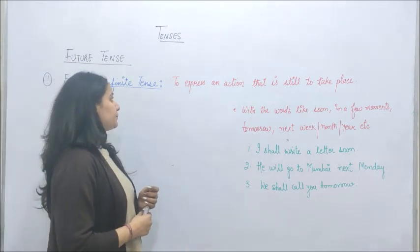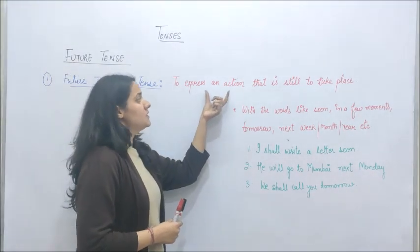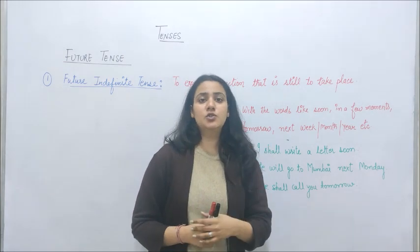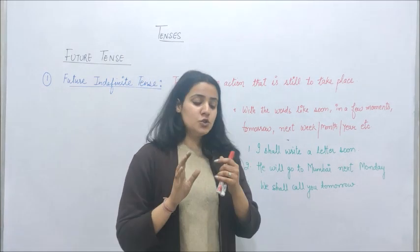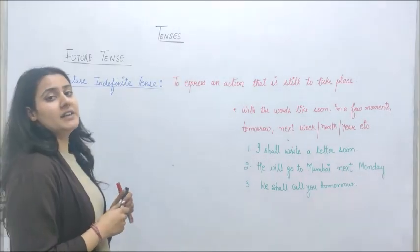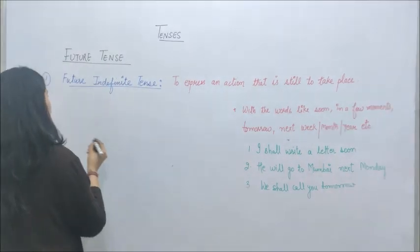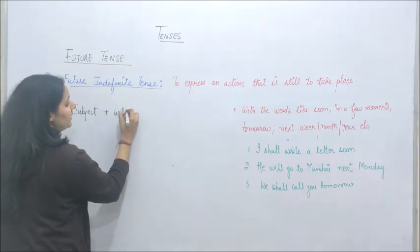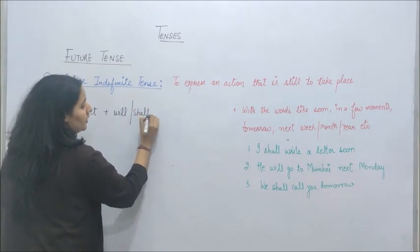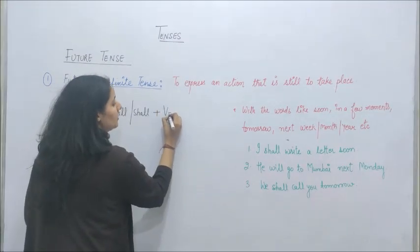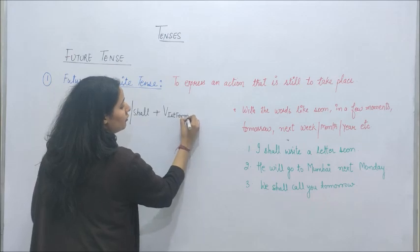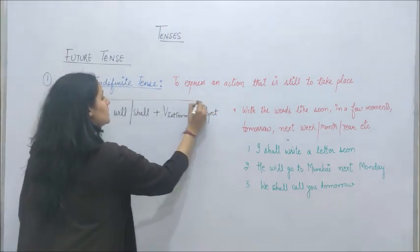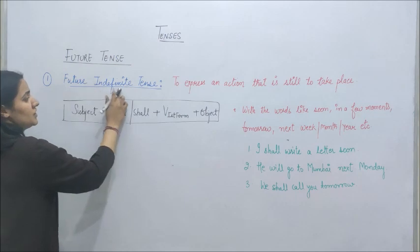Future indefinite tense is used to express an action that is still to take place. When an action is still to take place in the future, we use future indefinite tense. If we talk about syntax — the way future indefinite tense is written — the format is: Subject + helping verb (will/shall) + main verb (first form) + object. This is the syntax or sentence formation for future indefinite tense.